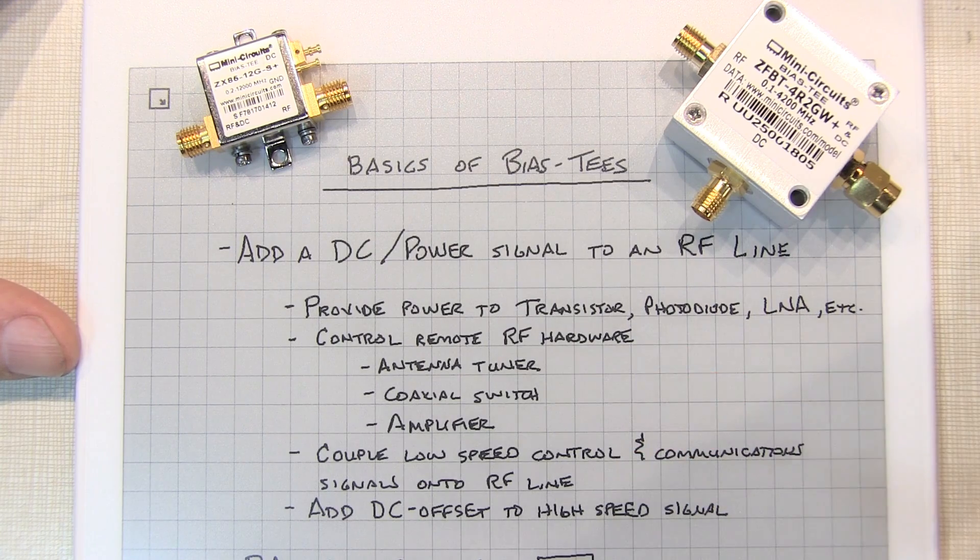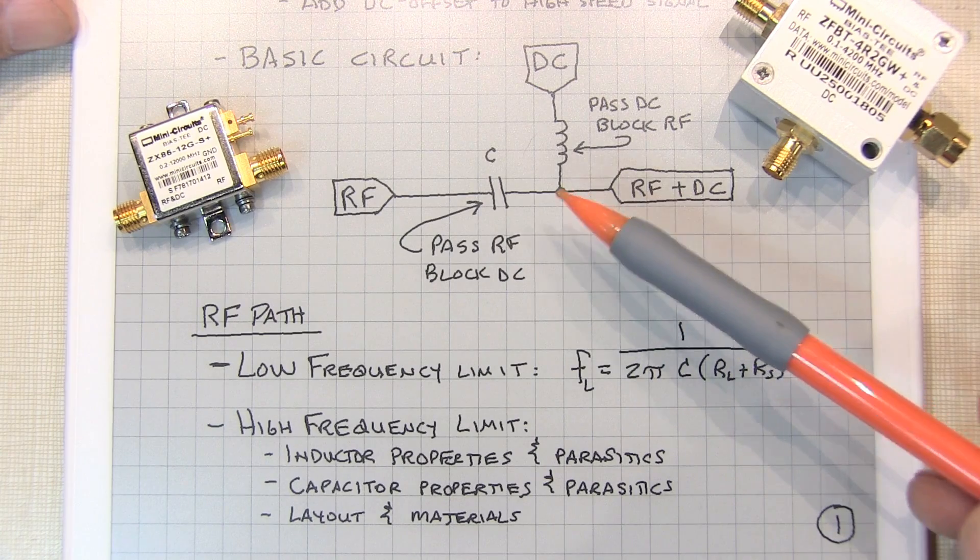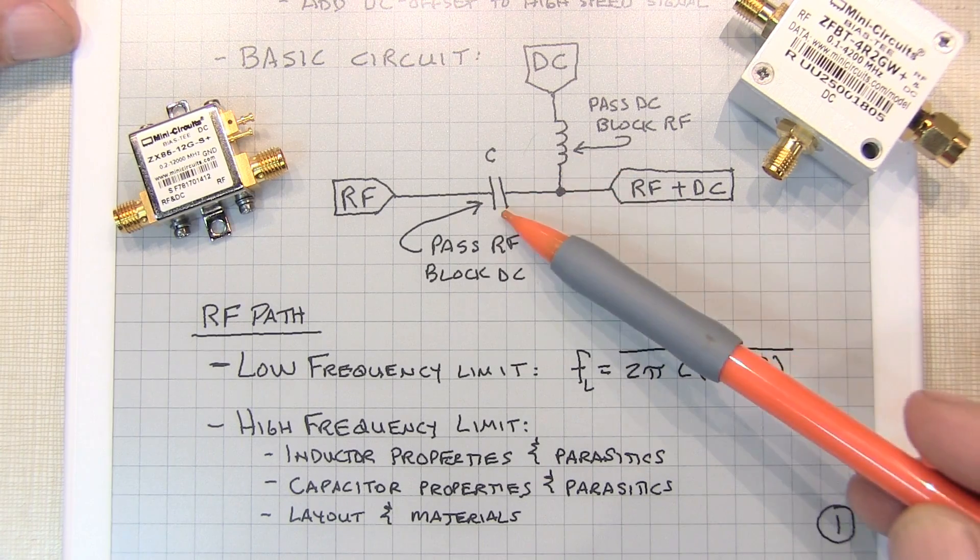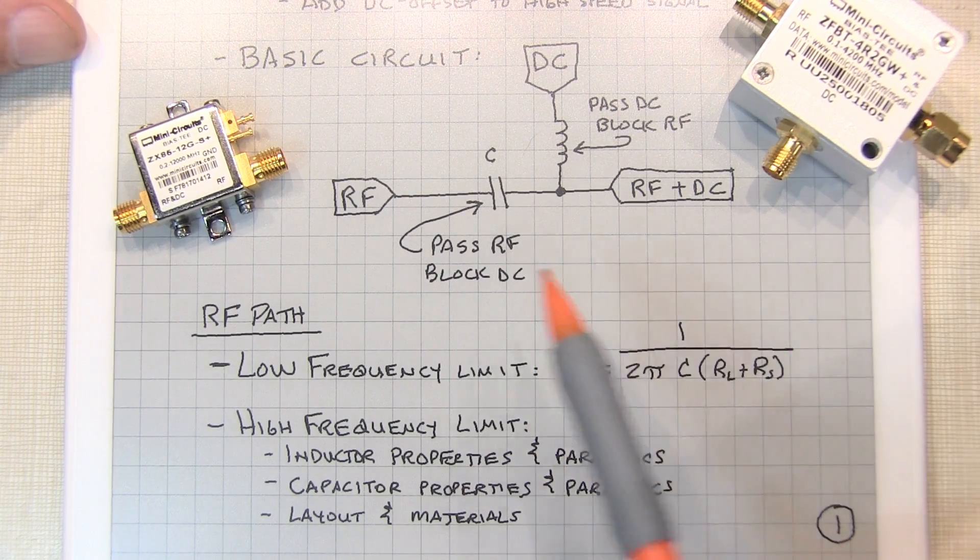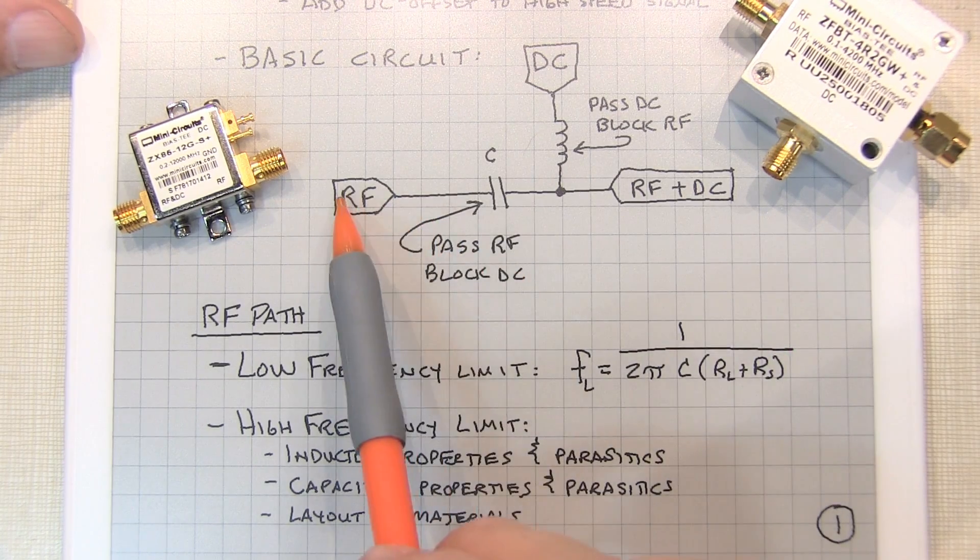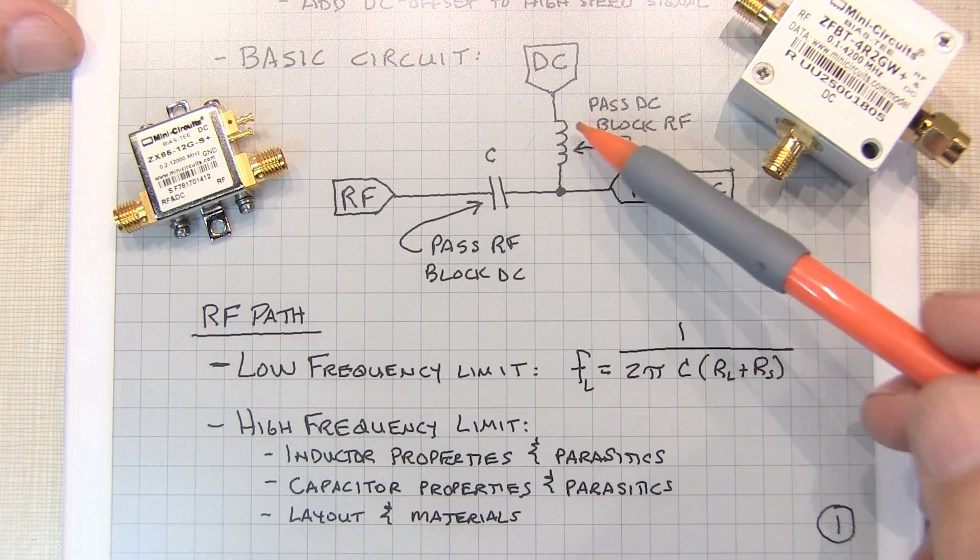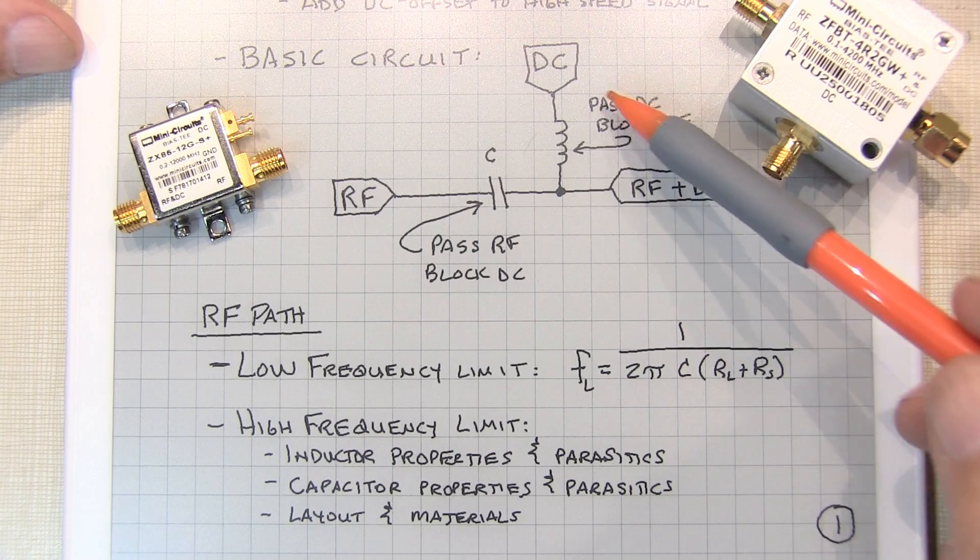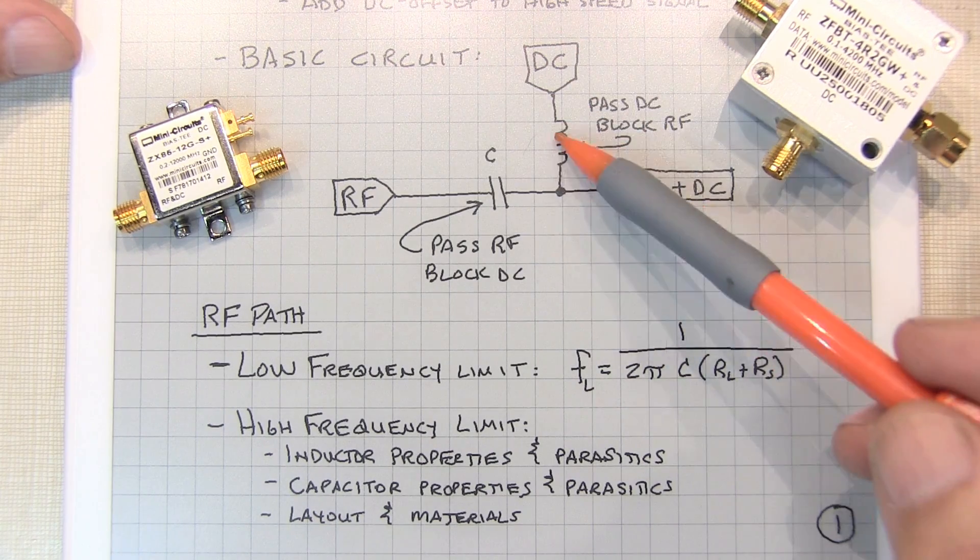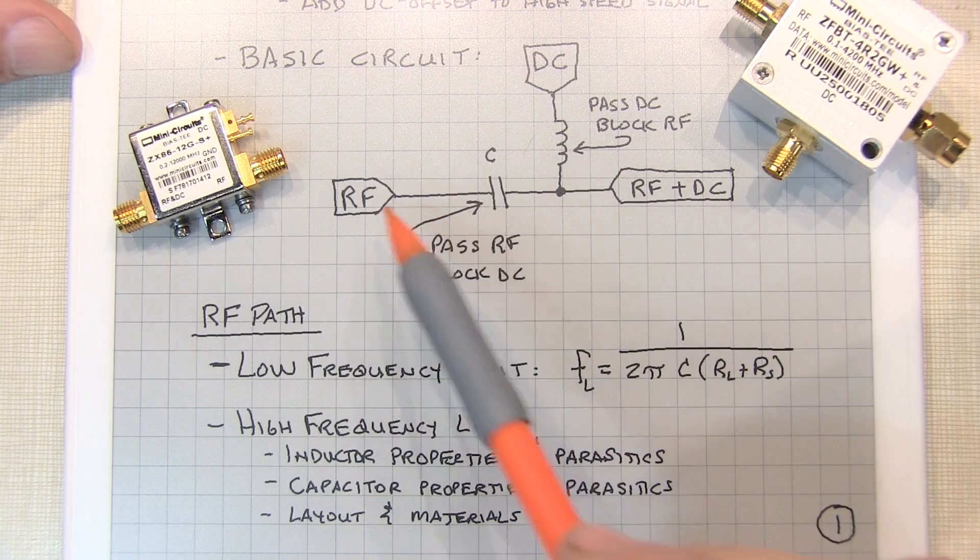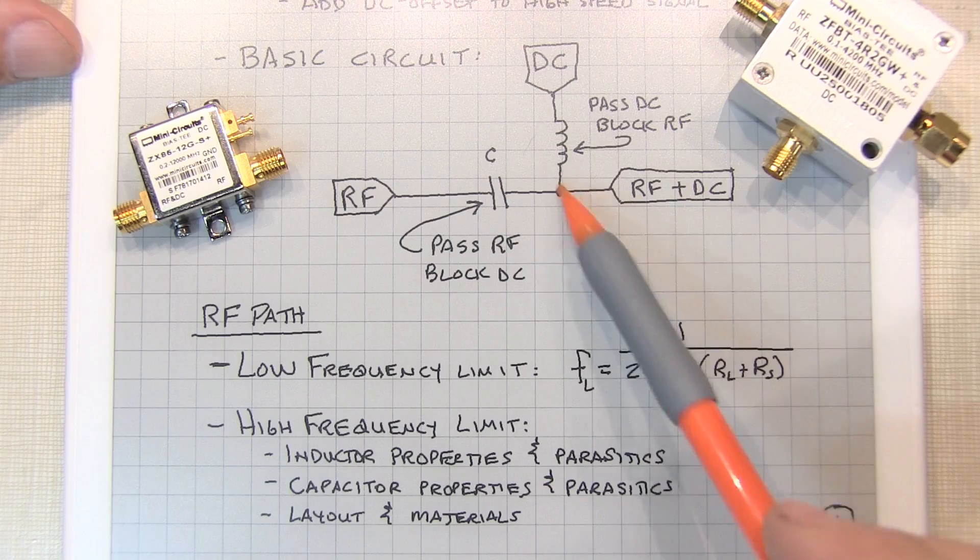But first let's take a look at what a bias tee is. The circuit for a bias tee is really ideally quite simple. It's simply just two components, a capacitor and an inductor. And the operation is really straightforward. The capacitor will pass the RF through this path here but block DC. And then the inductor or RF choke will pass the DC signal out this path but block the RF from going back up to the DC path. So on one side we've got RF and on the other side we've got RF plus our DC signal.